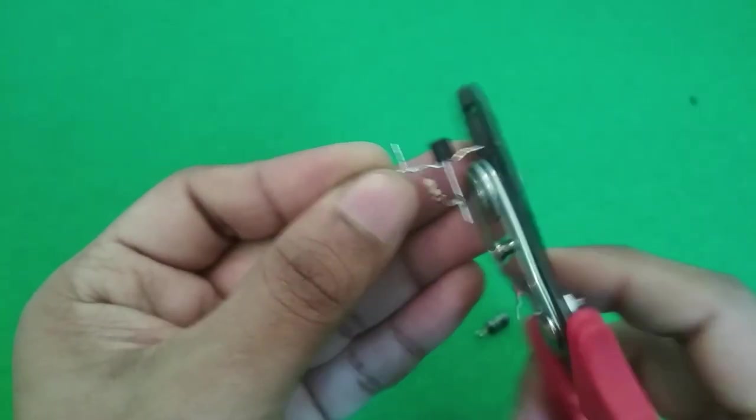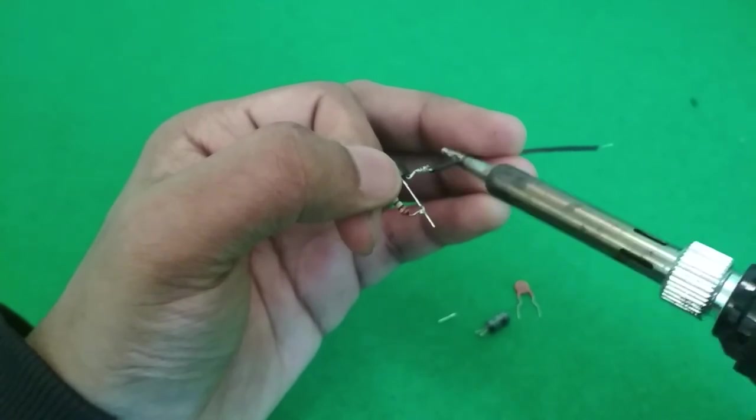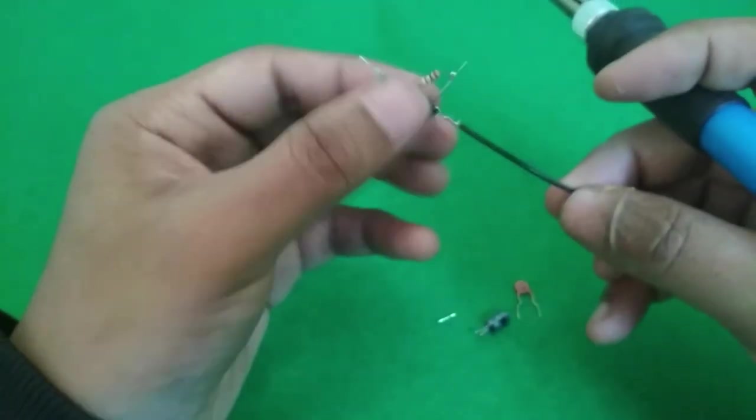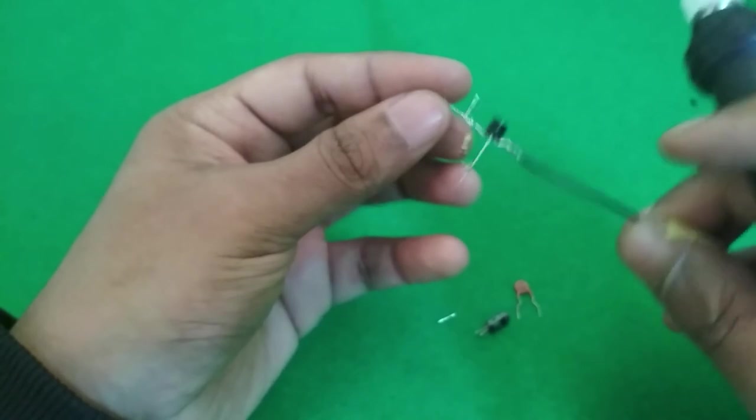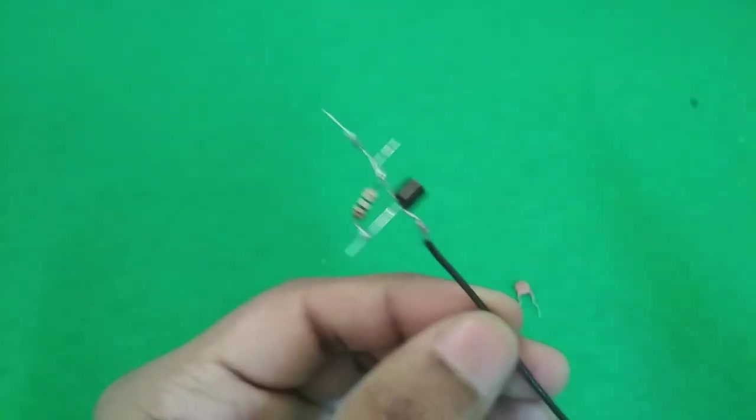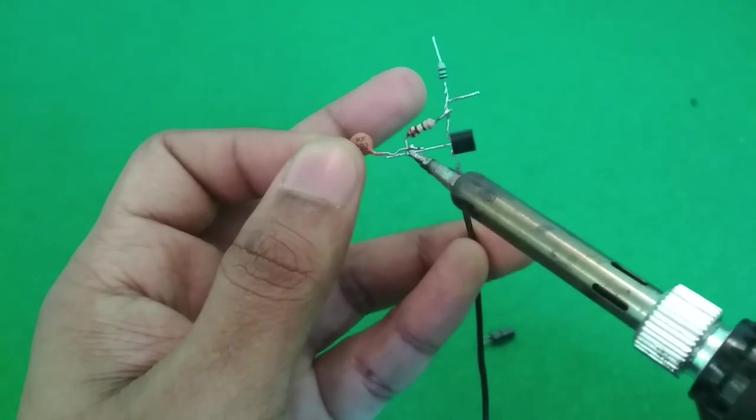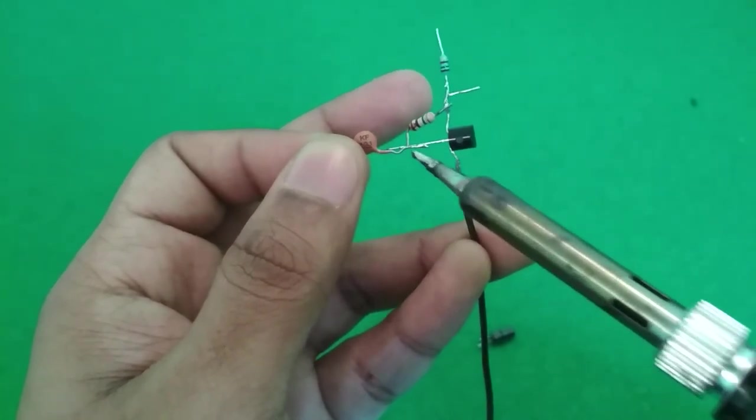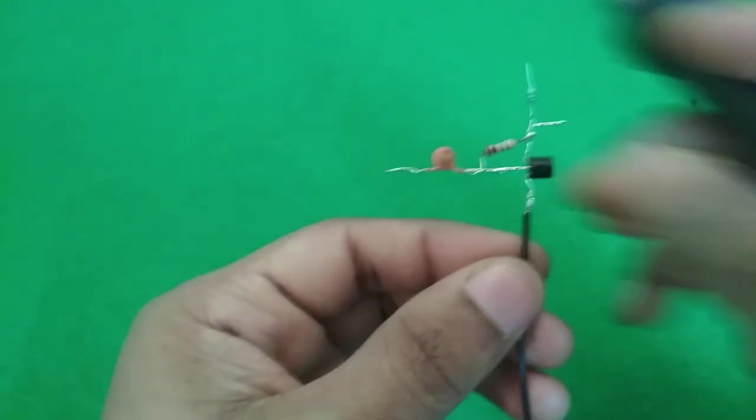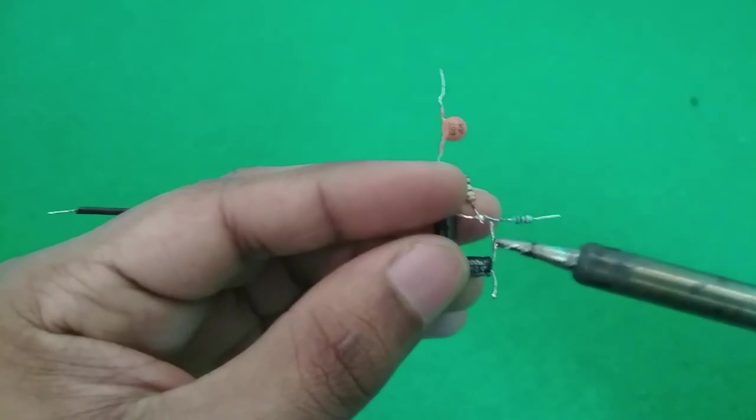Now I'll connect a black wire to the source of the FET to remind myself that that goes to ground. The only thing left to do now is connect the input and output capacitors. So there's a 10 nF capacitor at the input connected to the gate of the MOSFET, and a 100 uF capacitor at the output connected to the drain of the MOSFET.